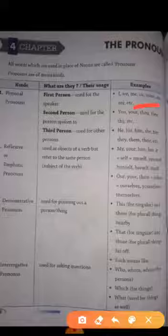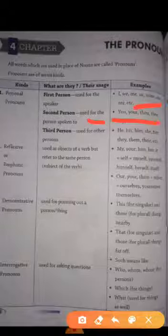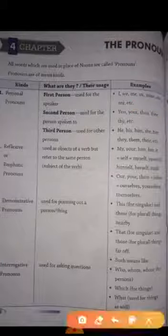Jaisa ki mein bhi keh rahi hou. Toh mein first person hoon aur mein apne liye pronounce I, we, me, ye sab use karoongi. Second person, aab mein aapse ye keh rahi hou. Toh you are the second person. So we will use pronouns for second person as you, your, tho, thi, thai, etc.